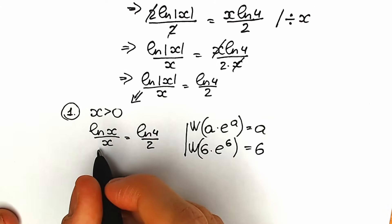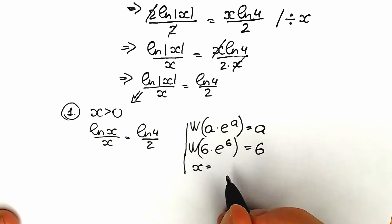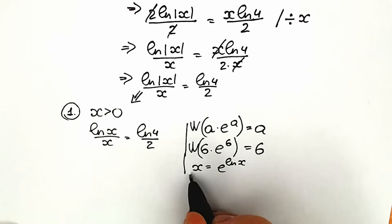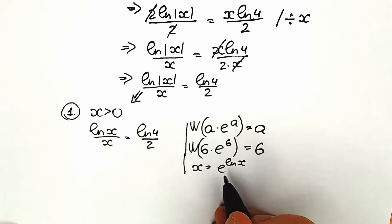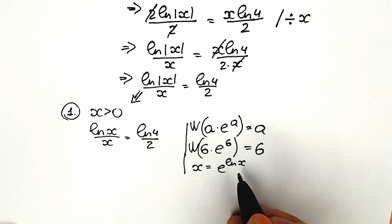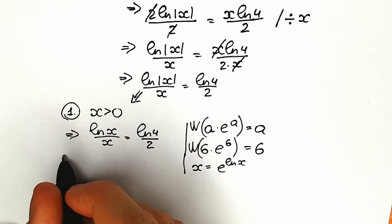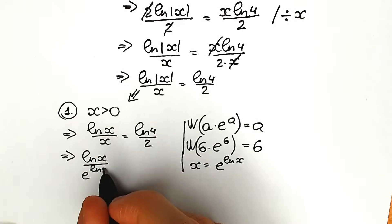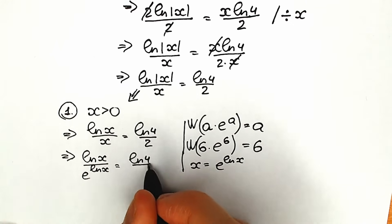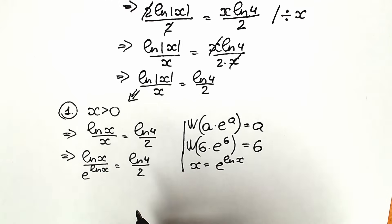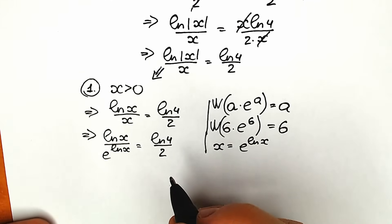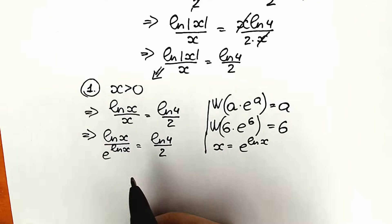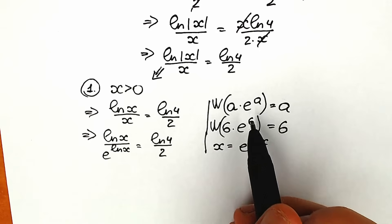Instead of x in the denominator, let's write e^(ln x) — this changes nothing, since e^(ln x) = x by log properties. So we now have: ln(x) / e^(ln x) = ln4 / 2. Now we need to bring e^(ln x) from the denominator to the numerator, of course with a negative sign.